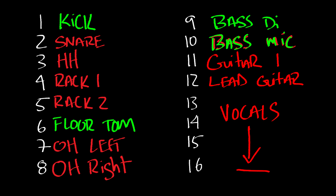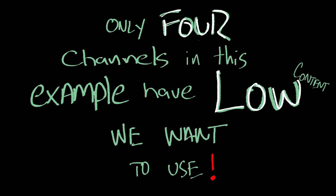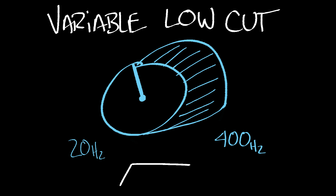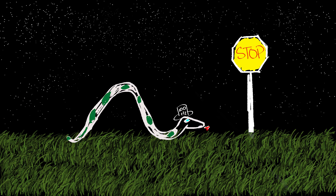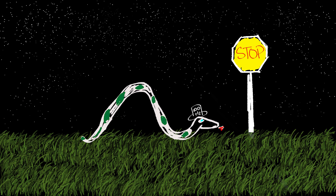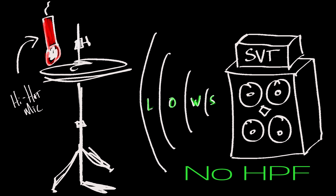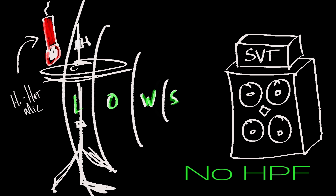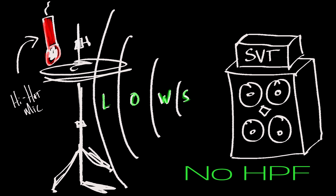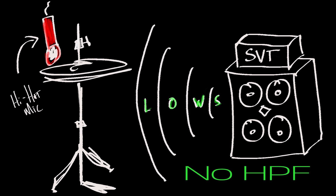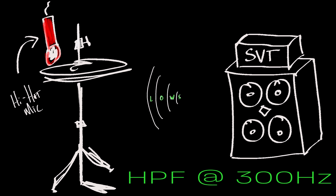Reducing the amount of gain of the lower frequencies helps to mitigate buildup of low energy on stage and reduces the possibility of low end feedback. With variable high pass filters, you can clean up your mix substantially simply by stopping lower frequencies from passing through channels where you don't want them. Have you ever had trouble with bleed from a drum sub or bass amp into a hi-hat or snare drum microphone? Employing your variable high pass filter on each channel just below where the usable information is will leave only the part of the signal you do want to process on those channels.